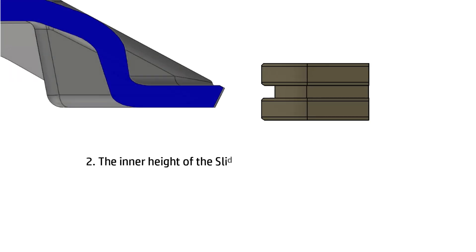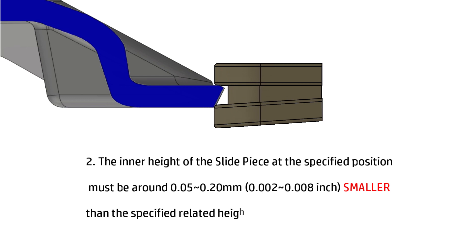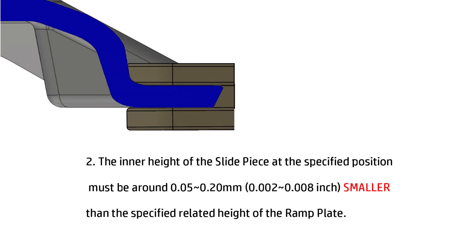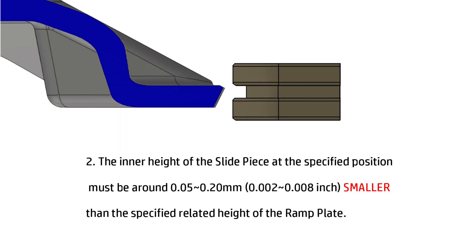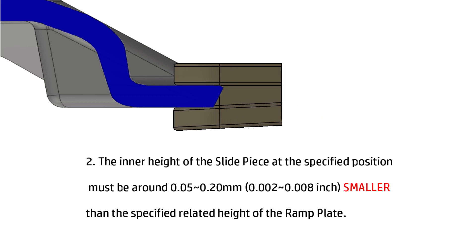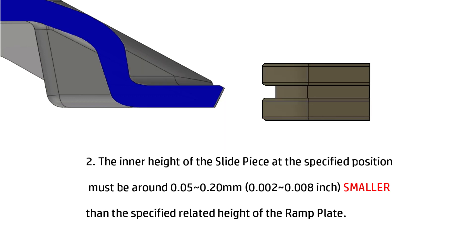Second, the inner height of the slide piece at the specified position must be around 0.05 to 0.20 millimeters smaller than the specified related height of the ramp plate.